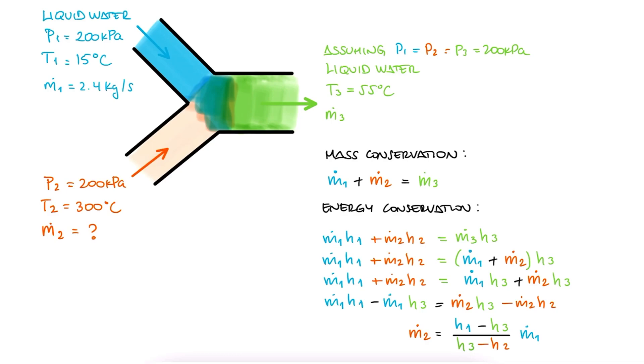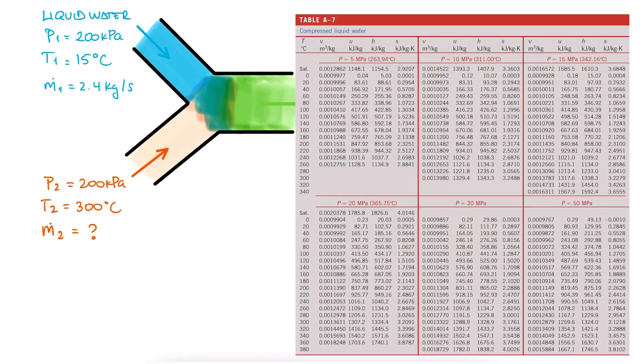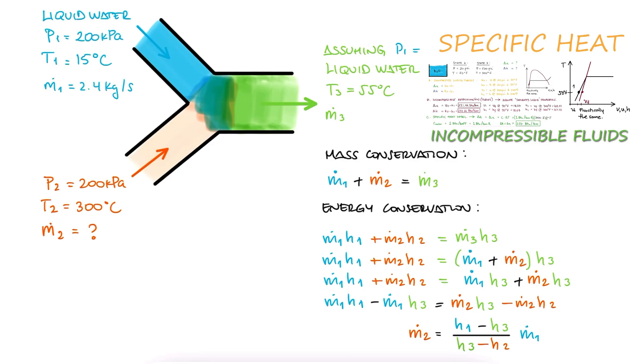For the most accuracy, we should use the compressed liquid tables, but since a pressure of 200 kilopascals is too low for any of the subtables we have there, we use the approximation we learned about in the specific heat for incompressible substances main video, link below.